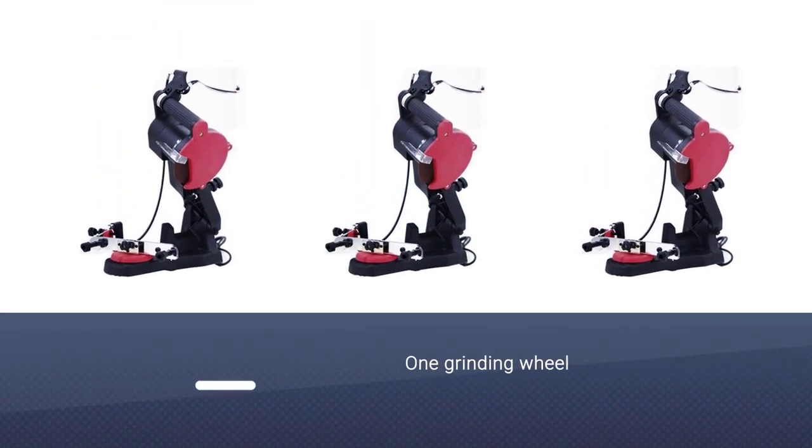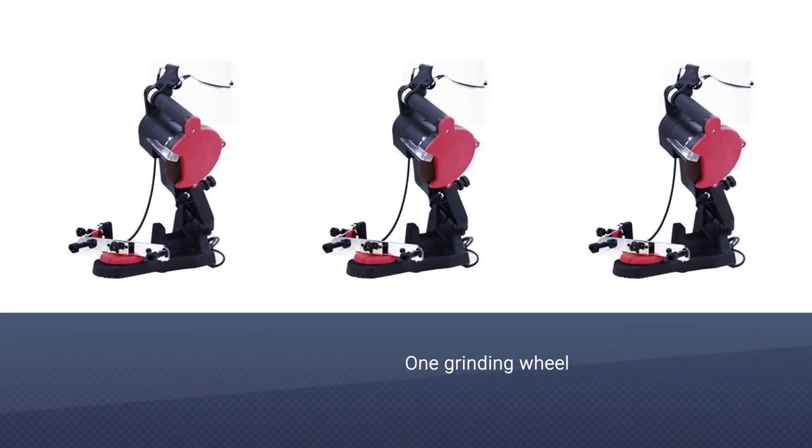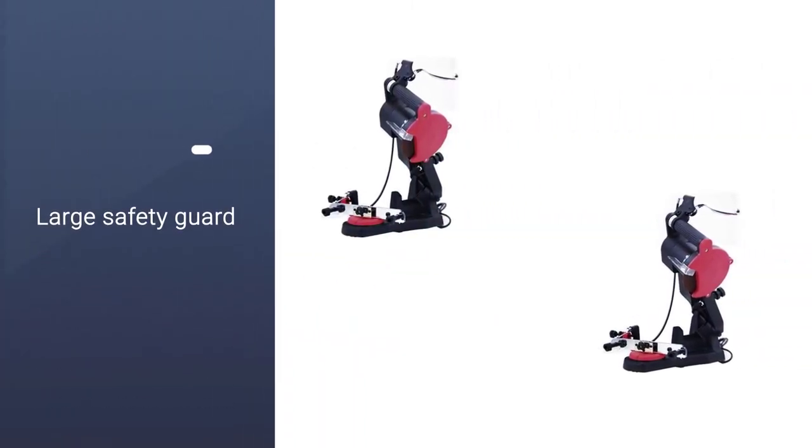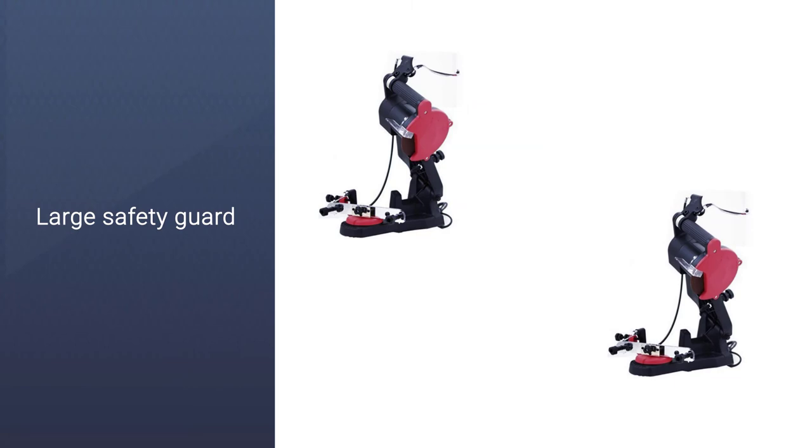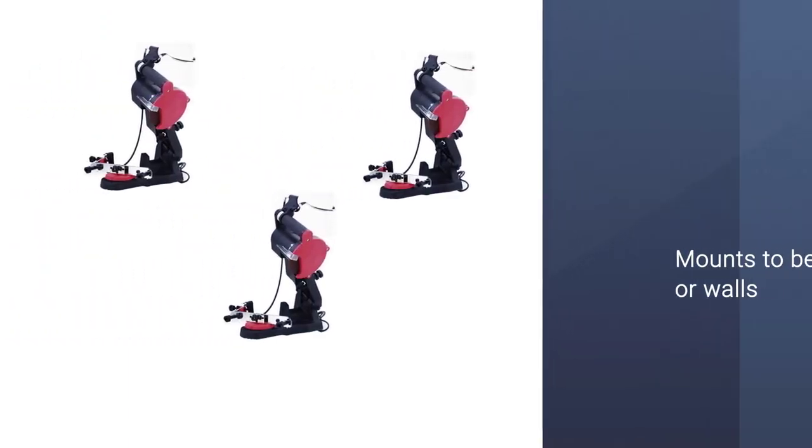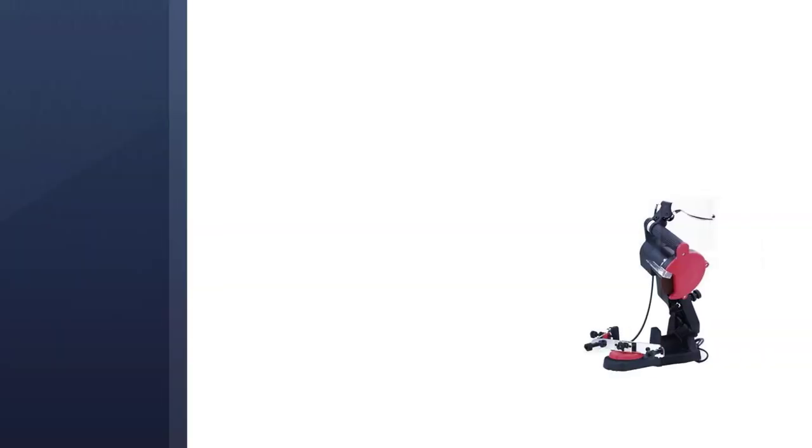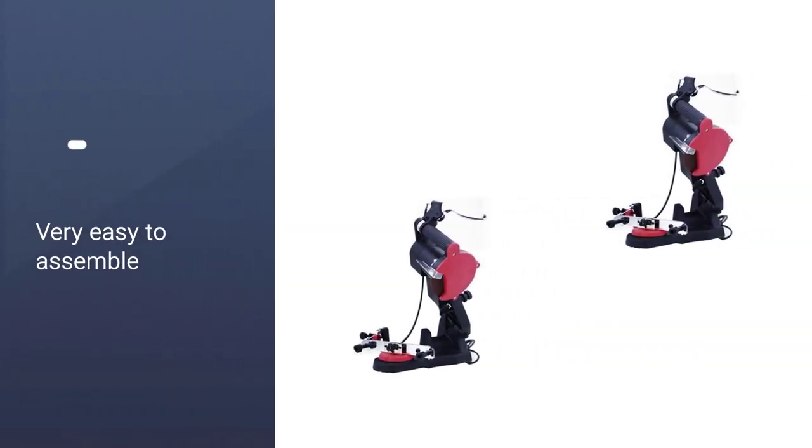You only get one grinding wheel with this device, which measures four and a quarter inch by one eighth inch and it is adjustable to sharpen most chain sizes. It isn't designed for very regular use. This sharpener is quite basic, but this does mean that it is straightforward to assemble and use, which is just as well as the instructions are not helpful.